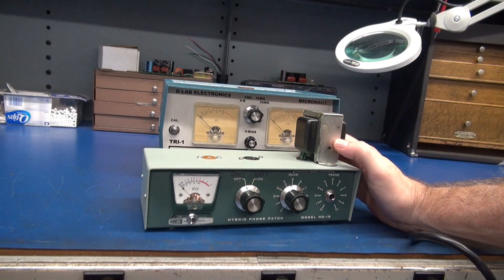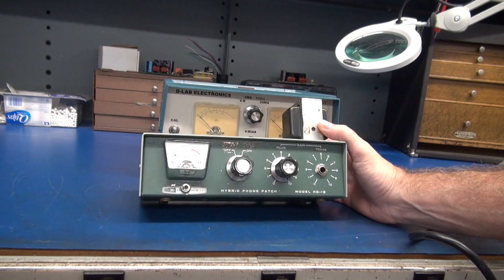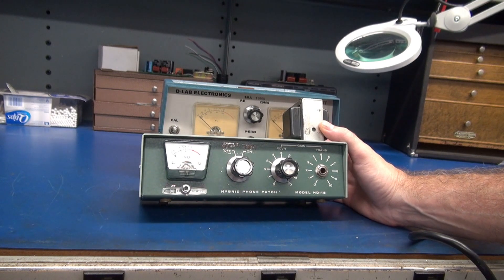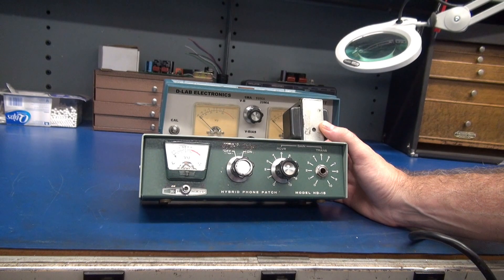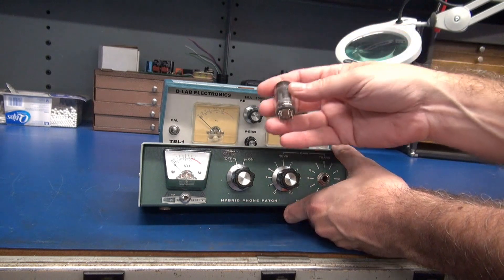Here's the prototype unit for the preamp tube microphonic analyzer. I built it in a Heathkit HD15 phone patch. This was an experiment to see if I could watch microphonic actions out of preamp tubes rather than put them in amplifiers to test it.